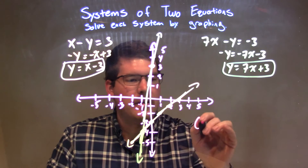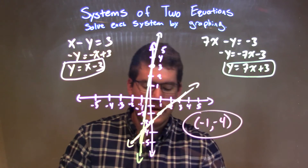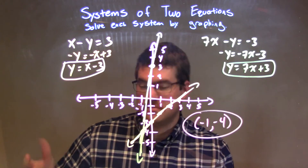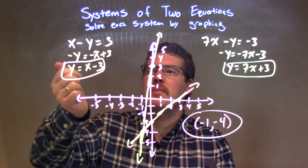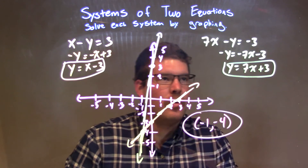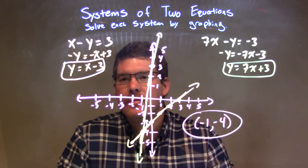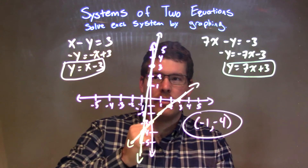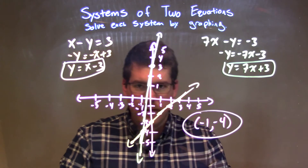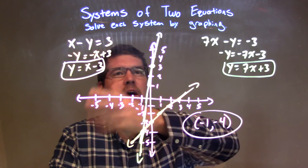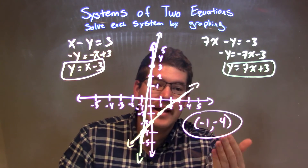Our intersection is at negative 1, negative 4, and that's where these two equations meet — that's the only solution where they're both true. Quick recap: we were given x minus y equals 3 and 7x minus y equals negative 3. I rewrote them in y equals mx plus b form, graphed both, and saw that they intersected at negative 1, negative 4. That is the solution to this system of equations by graphing.